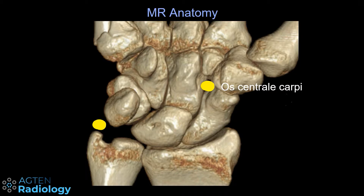Ossicles above the tip of the ulnar styloid can either be an accessory ossicle named the lunula, or also a pseudoarthrosis after an ulnar tip fracture. If the ossicle is located more medially within the TFC, then it's called the os triangulare.